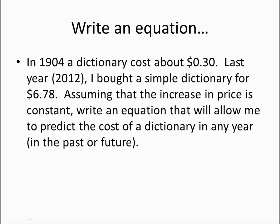In 1904, a dictionary cost about $0.30. Last year, 2012, I bought a simple dictionary for $6.78. Assuming that the increase in price is constant, write an equation that will allow me to predict the cost of a dictionary in any year in the past or future. That's the whole point of these writing equations. It's creating a model that will predict both things in between, that's interpolation, and things that are outside of what we're talking about, which is extrapolation. So, what do I do? Well, I essentially have two points here. I have the year, 1904, and I have the cost, which was 0.30. And then I have another year, which was 2012, and I have another cost, which was 6.78.